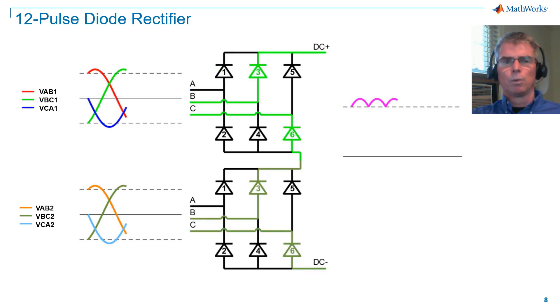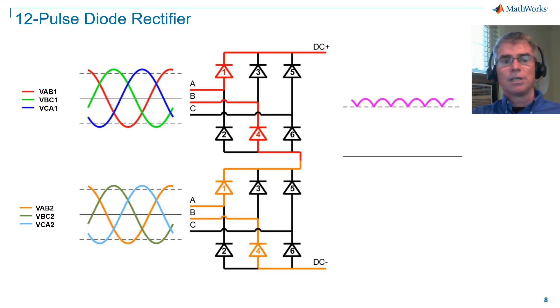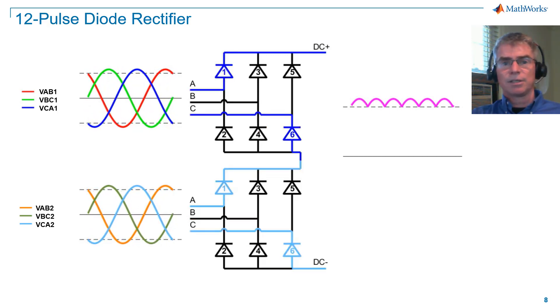Note that because VAB1 is in phase with VAB2, and so on, the upper and lower diodes commutate in sequence. This means that we have six-pulse operation. The pulsing is happening every 60 degrees. As we have six-pulse operation with 12 devices, we're essentially wasting the potential of the architecture.